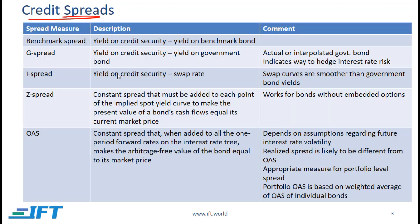Now let's talk about credit spreads. A benchmark spread is the yield on a credit security minus the yield on a benchmark bond. If the benchmark bond is a government bond, then the spread is called a G spread. The G spread is fairly simple to calculate, and generally different fund managers calculate it in the same way.